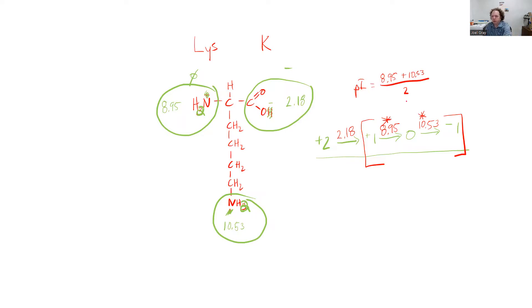I've got my calculator. 8.95 plus 10.53 equals 19.48, divide that by 2, and I end up with a pI of 9.74.